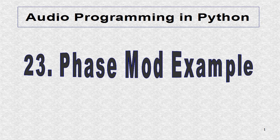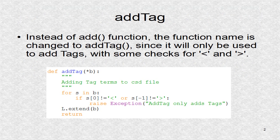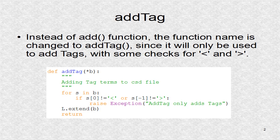A phase modulation example is presented. Instead of using the function that was named add in our CSound module, it will be renamed as addTag to make its meaning clear. Further, there are checks to see if the first and last character are the angle brackets.